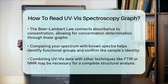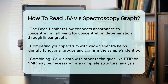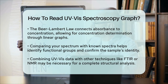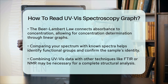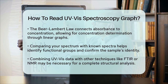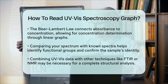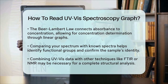Sixth, compare with known spectra. To determine the structure of your compound, compare your spectrum with known spectra of similar compounds — this can help you identify specific functional groups and confirm the identity of your sample. Finally, consider additional data. Sometimes UV-Vis spectroscopy alone isn't enough, and you might need to combine it with data from other instruments like FTIR or NMR to get a complete picture of the compound's structure.